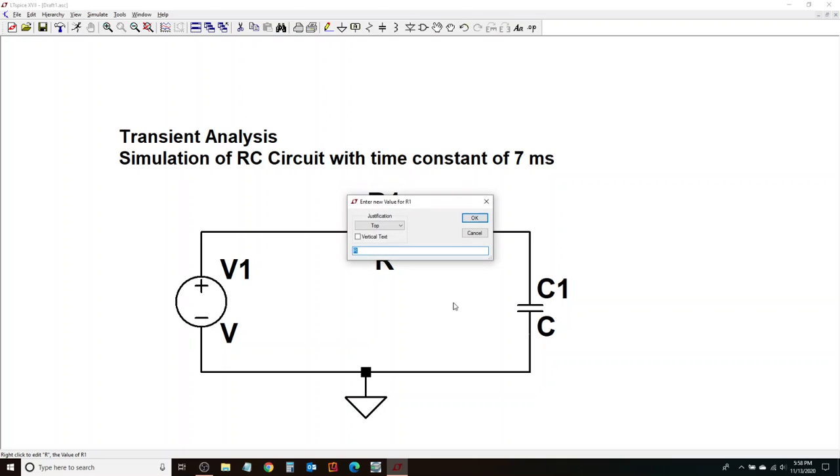So for example, for R1, I can pick a 1.5 kiloohm resistor, and if I wanted my time constant to be 7 milliseconds, then the product of R and C would need to be 7 milliseconds.